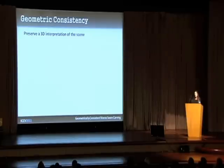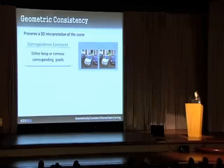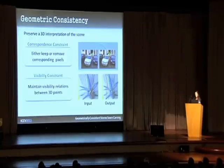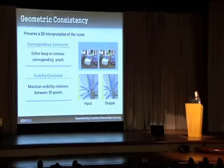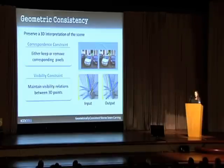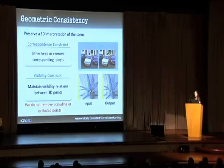Our method preserves the 3D interpretation of the scene by imposing two constraints. First, corresponding points are either both kept or both removed. Second, we maintain the original visibility relation between 3D points — if point A occludes point B in the original image, then after removing the seam, A will still occlude the same point B. We guarantee this constraint by not removing occluding or occluded points.